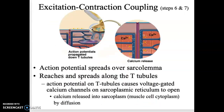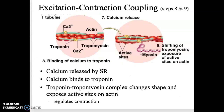Step six: the action potentials travel down into the T-tubules, and that action potential causes calcium to be released into the sarcoplasm, or the muscle cell cytoplasm. Once there's a bunch of calcium released, it finds its way over to troponin. Calcium binds to troponin, which shifts everything out of the way — the tropomyosin rope shifts out of the way — and then you can see the active sites on actin exposed.